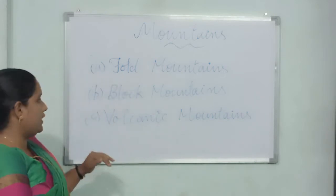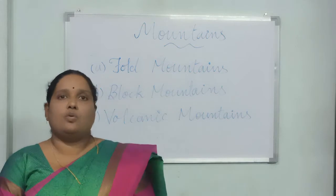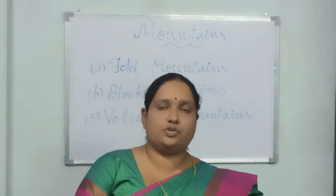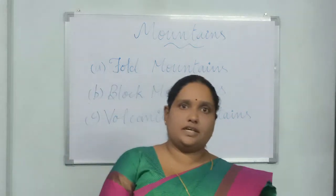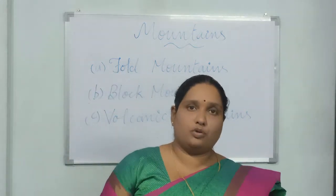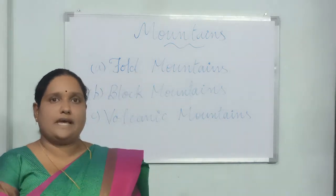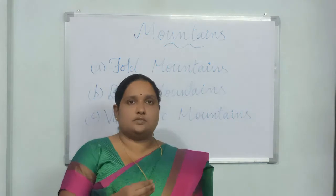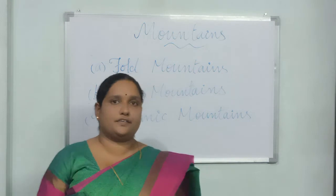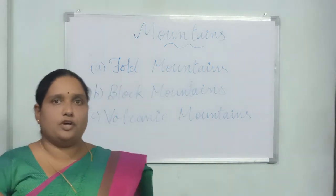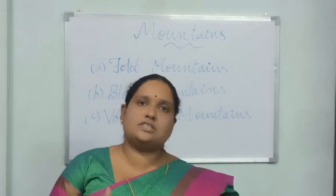The third type of mountains are volcanic mountains. Volcanic mountains are formed due to volcanic eruption. There are different types: active volcanic mountain, dormant, and extinct. We will discuss what are the different types of volcanic mountains and how they are formed in the second part of our video, where there is a PowerPoint presentation with each and every detail.